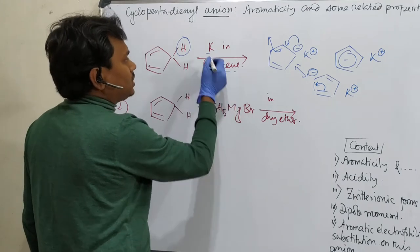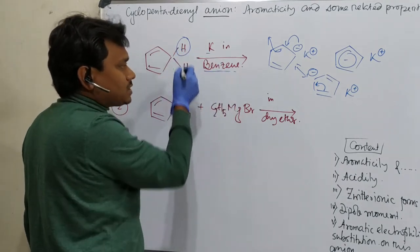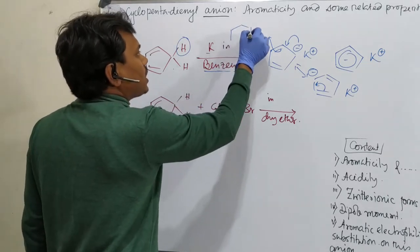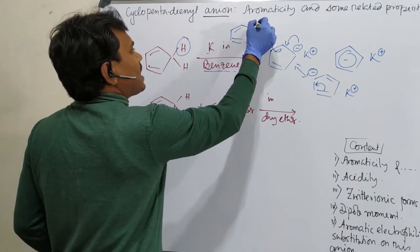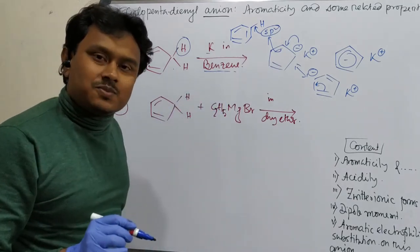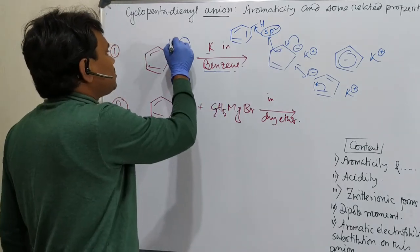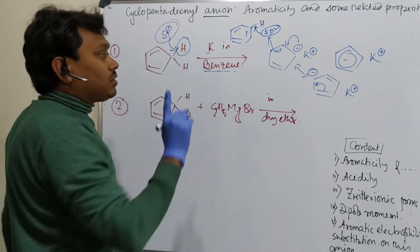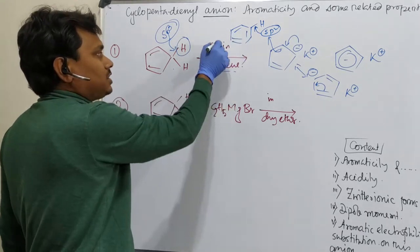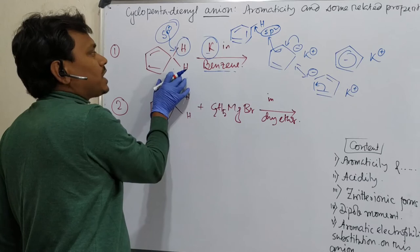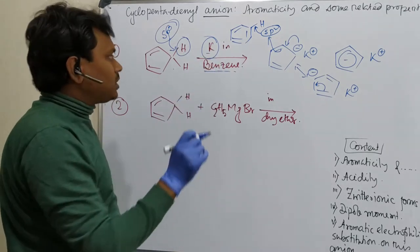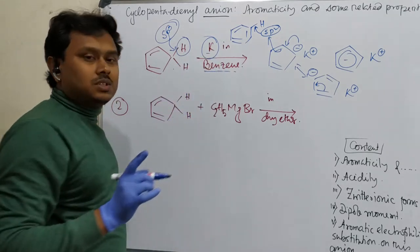Now the question: why does potassium react with the sp3 C-H of cyclopentadiene rather than the sp2 C-H bonds of benzene? Generally we consider sp2 hydrogens more acidic than sp3, yet here the opposite holds. The reason is the unique aromaticity of the cyclopentadienyl anion. Potassium reacts selectively with cyclopentadiene because the resulting anion gains aromatic stabilization, and the benzene is used in a measured amount as solvent.